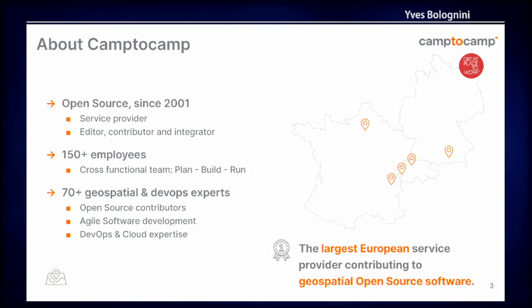So about Camp2Camp - we are an open source service provider since 2001. We are bigger and bigger, more than 150 employees now. I was the sixth employee in 2006 when I joined the company. We are also contributors, not only a service provider. We use a lot of agile software development and we have experts in DevOps. We are the largest European service provider for geospatial open source.